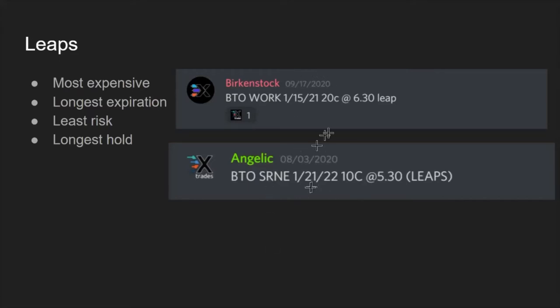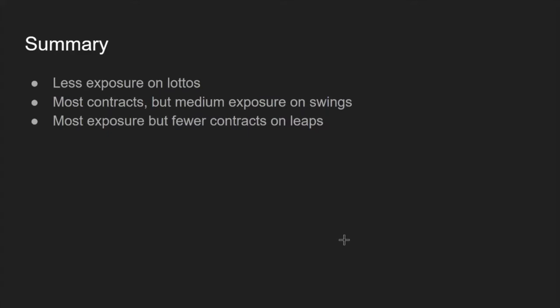You should start worrying about leaps like Birkenstock's play around October getting into November, and Angelic's was pretty much the same expiration. Now for the summary: with lottos you go less exposure and they're the cheapest contract, but you still want the least exposure because if they hit you'll get a good return. Since you're expecting a big short-term move, if it goes against you, you don't want to be losing too much capital. Least exposure, fewer contracts — but the upside is fairly large.